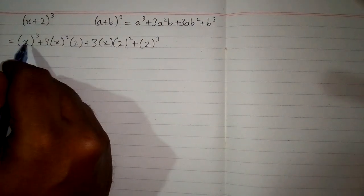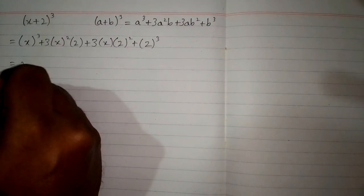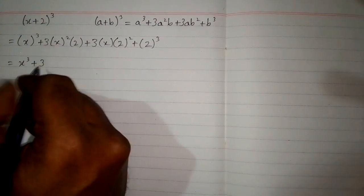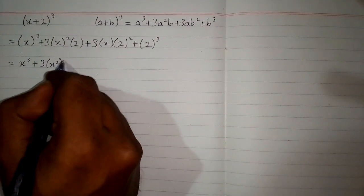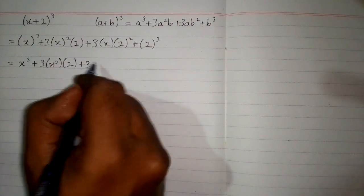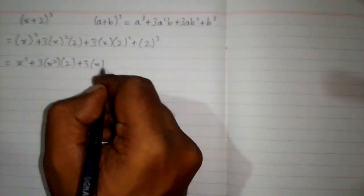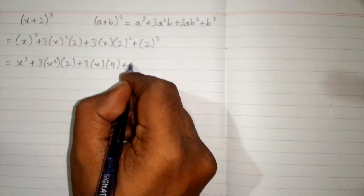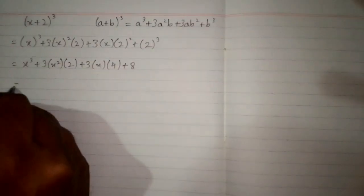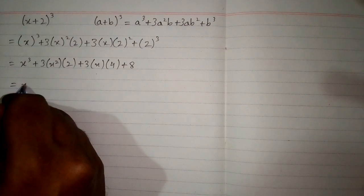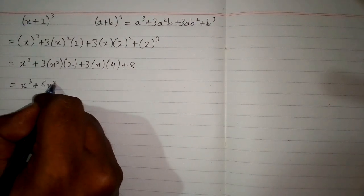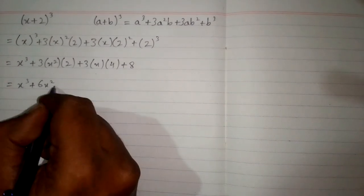Now cube of x is x³. Then 3 times square of x is 3x², times 2 is 6x². Then 3 times x times 2² gives 3 times x times 4, which is 12x. And cube of 2 is 8.